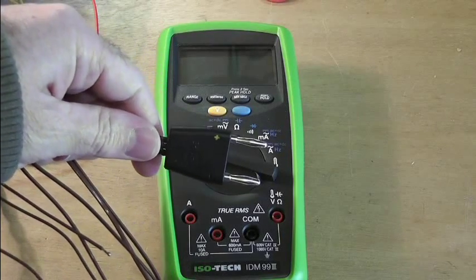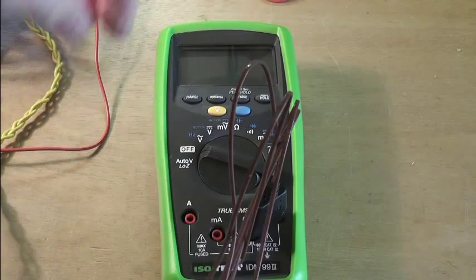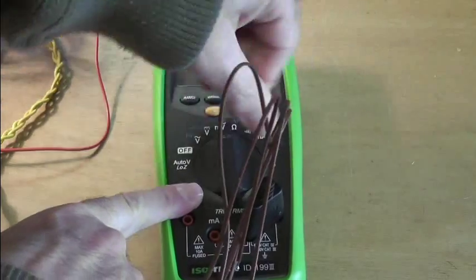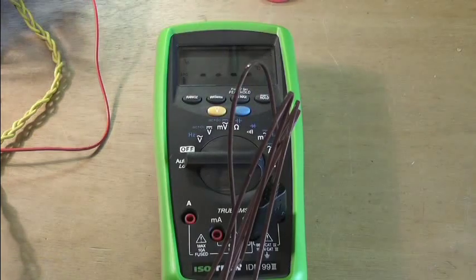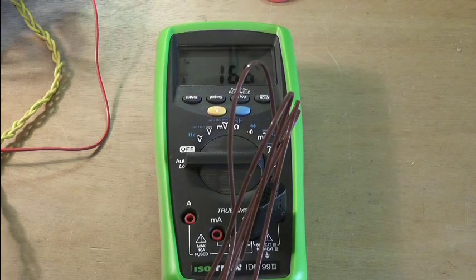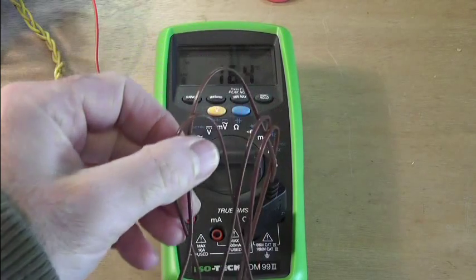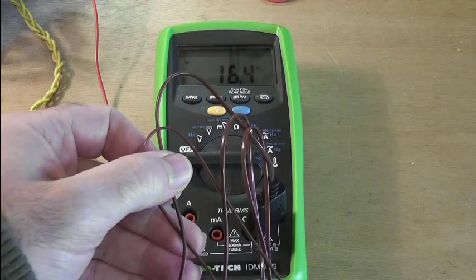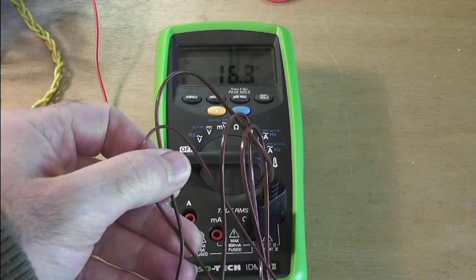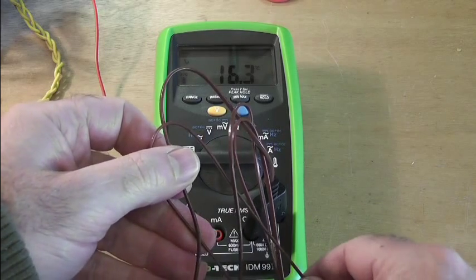I'm going to have a go with the temperature probe now. It's got one side marked positive, the other common and that goes in that slot there. And then we put it on temperature mode. Very quickly it shows you that it's not very warm in here which is why I'm wearing a coat. 16.3 but if I touch the probe it should go up really quickly.